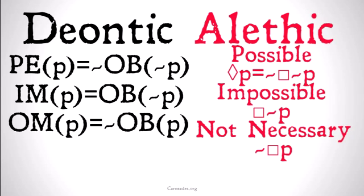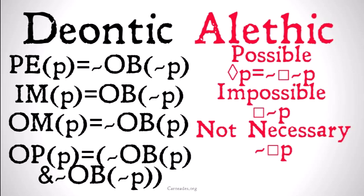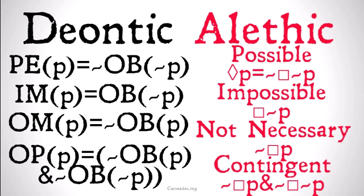'Omissible that P' means 'it's not the case that it's obligatory that P.' 'Not necessary' means 'it's not the case that it's necessary that P.' And 'optional that P' means it's not the case that it's obligatory that P, and it's not the case that it's obligatory that not P — whereas contingent means it's not the case that it's necessary that P, and it's not the case that it's necessary that not P.